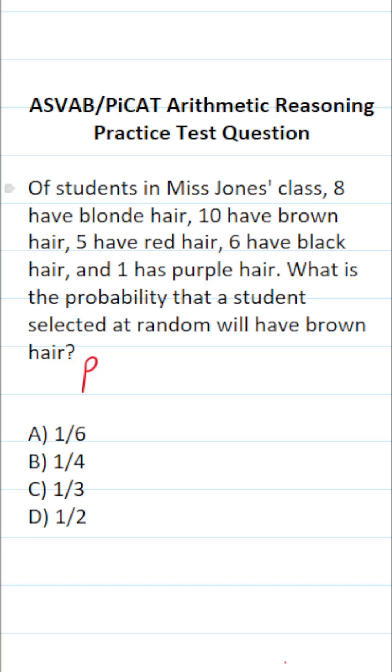So the probability of selecting a student that has brown hair is going to be equal to the number of students in the class with brown hair. That's going to be 10 of them divided by the total number of students in the class.